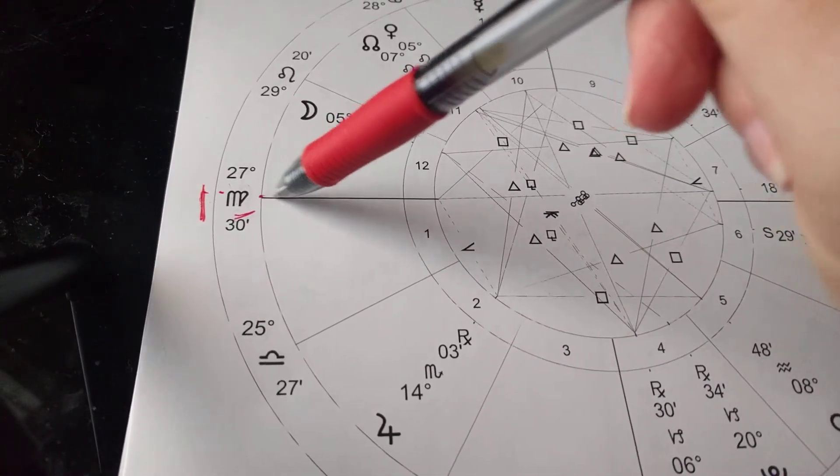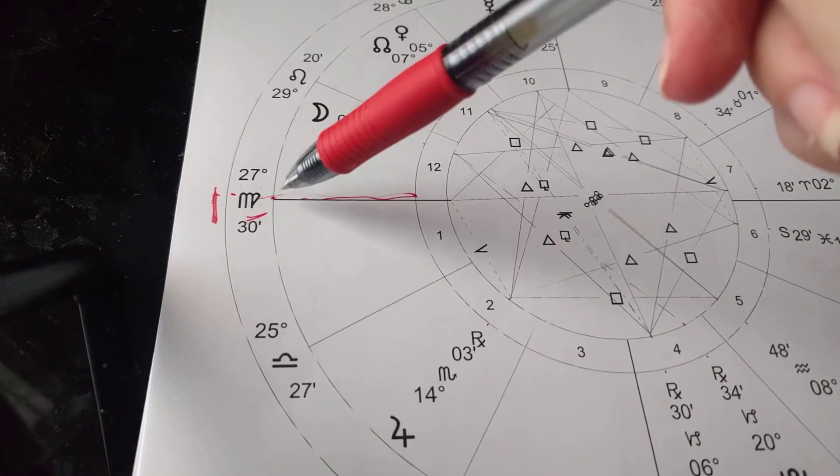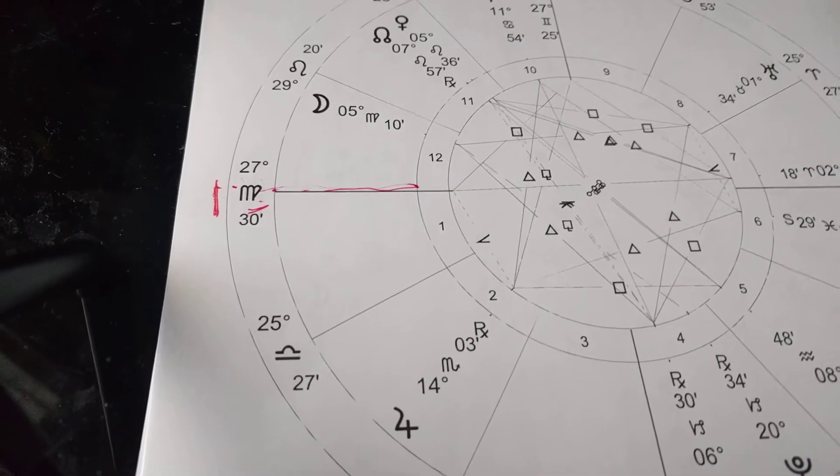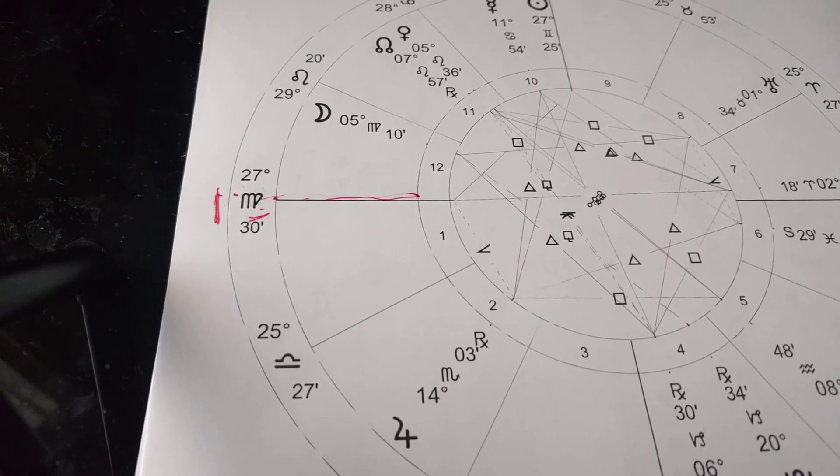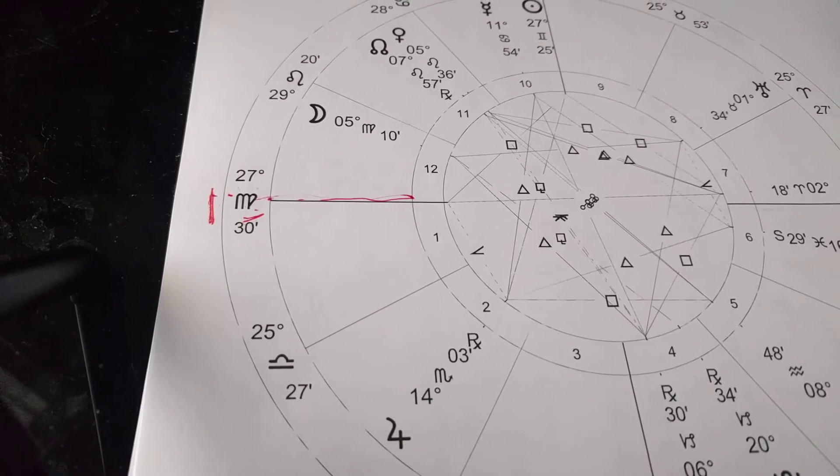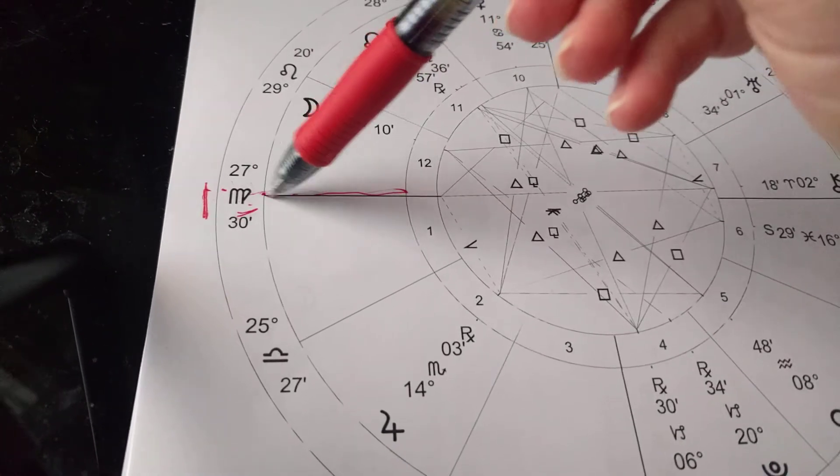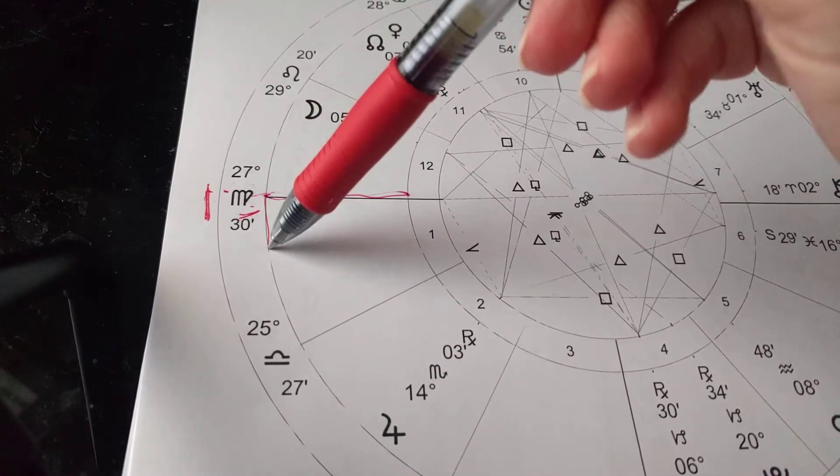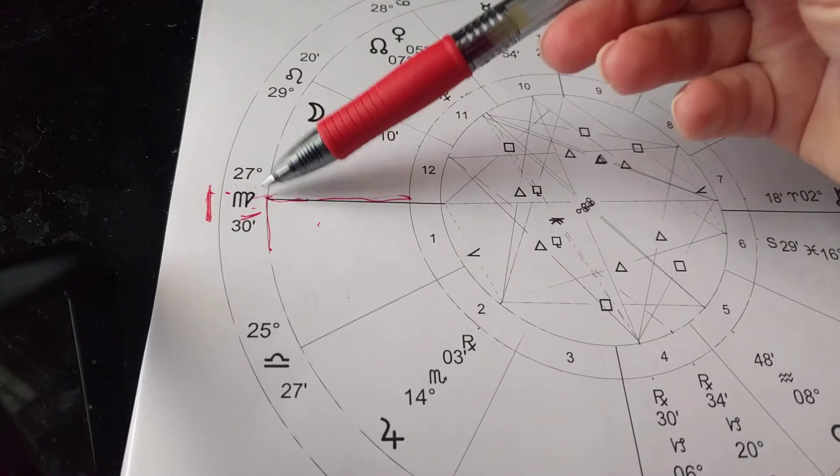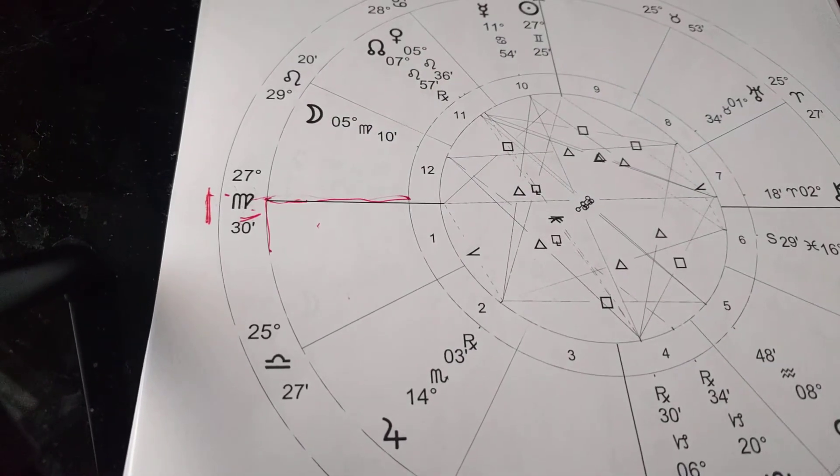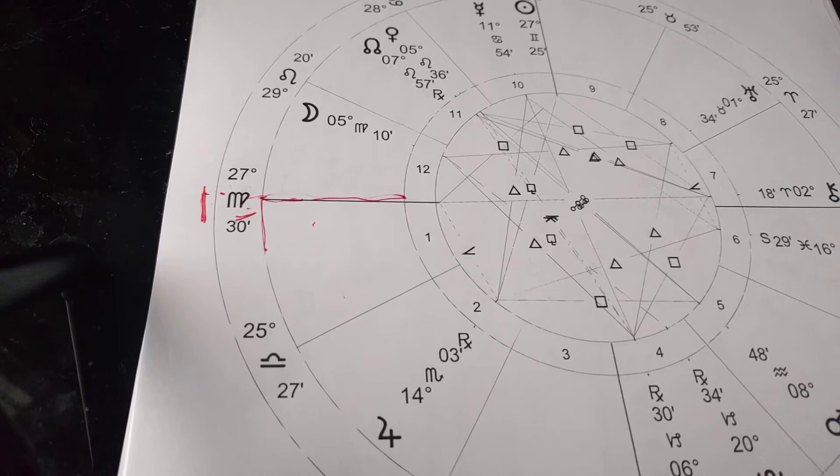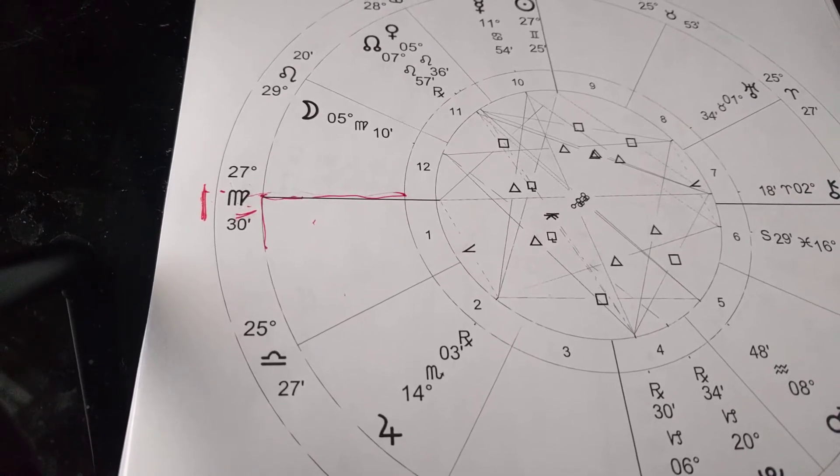So the Virgo rising sign is someone who can be very particular with details, well-groomed, and aware of their body. The ascendant is also the ruler of the first house, which is the physical body. So this is someone who could be very interested in athletics and taking care of themselves, yoga, nutrition.